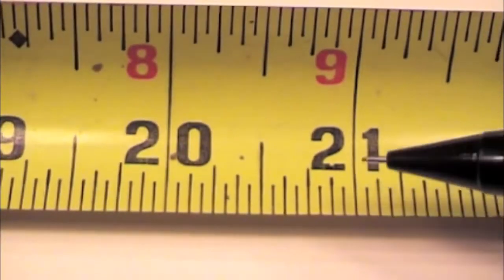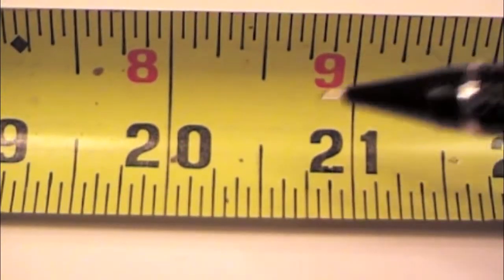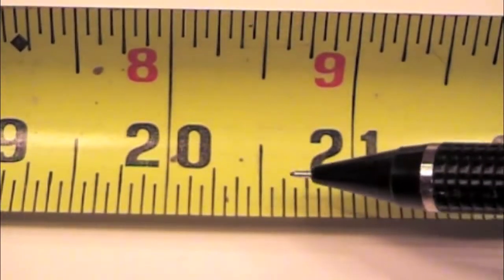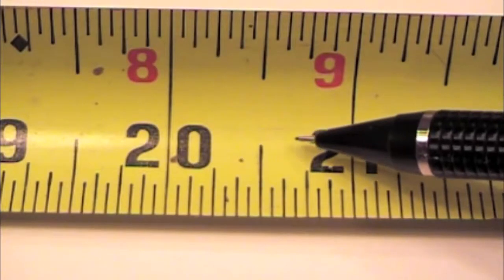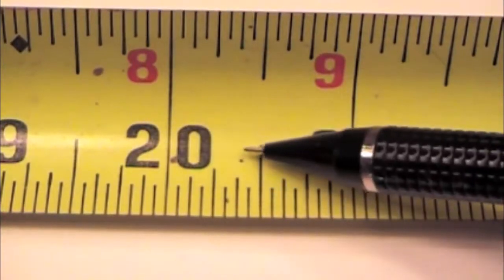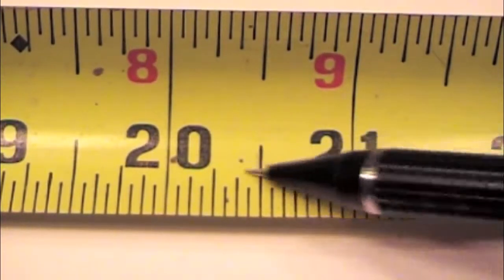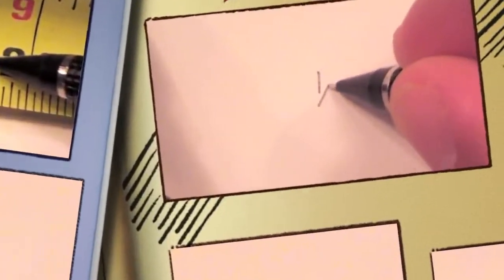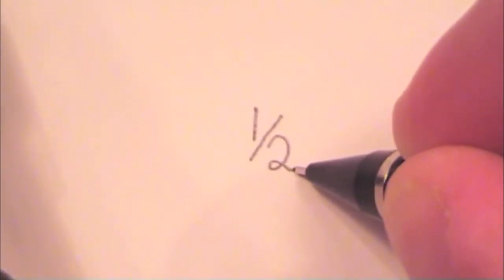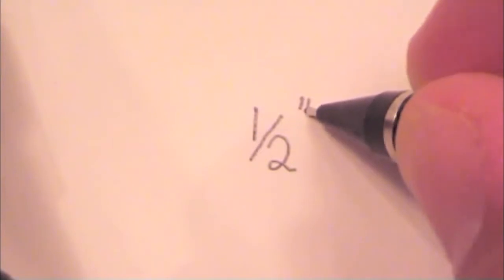And we're getting into fractions here, which is a whole other area that we're going to explore. Tape measures are a wonderful tool to learn fractions. So from zero, half, to one, we're dividing it into two, which ends up being one slash two. Half an inch.